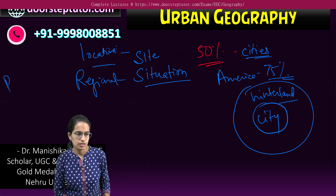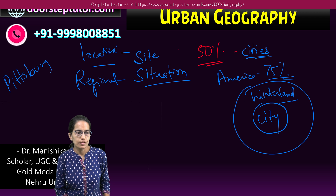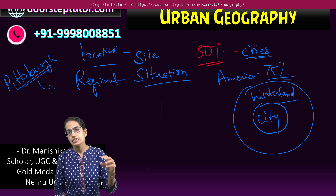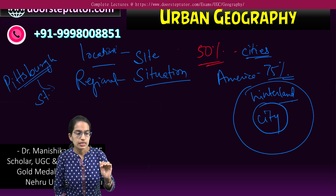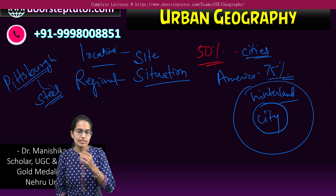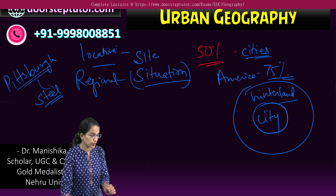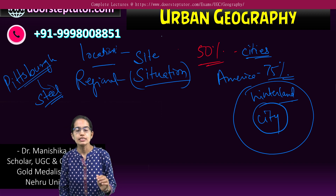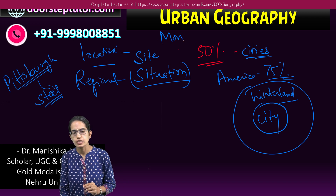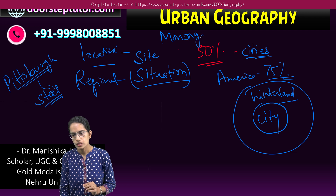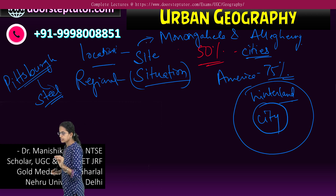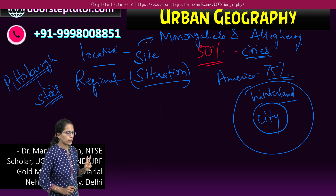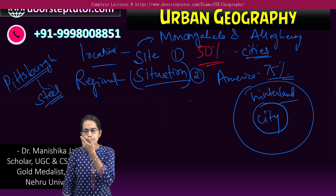Let's take the case study of Pittsburgh. Pittsburgh is situated as a major center for steel-producing industries. So Pittsburgh's steel production is one of the major things — when we talk about it, we focus on the situation. Its site is that it is situated at the confluence of two rivers: the Monongahela and the Allegheny. That is the site.